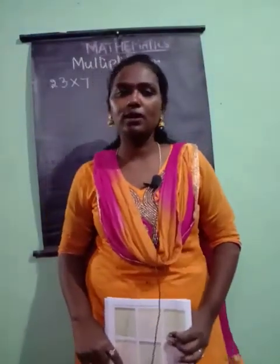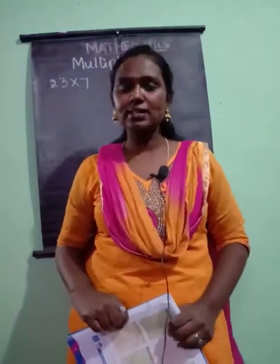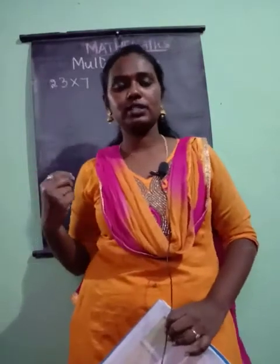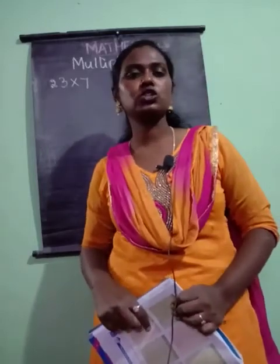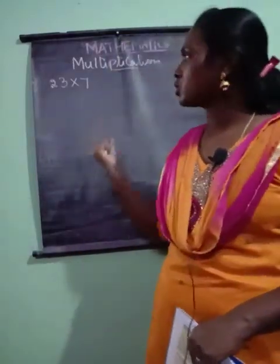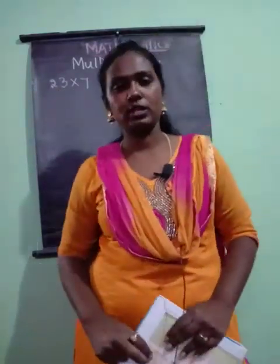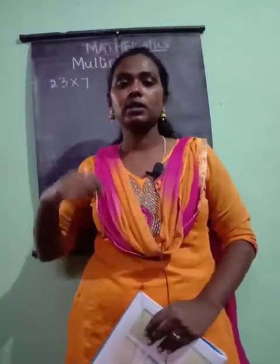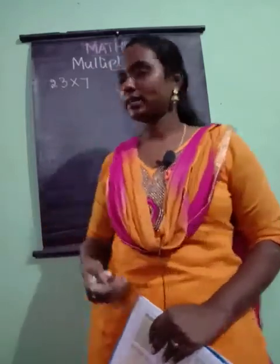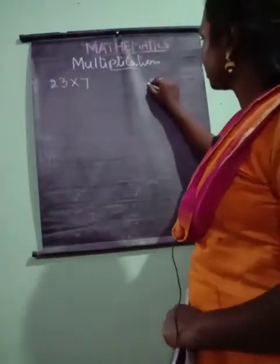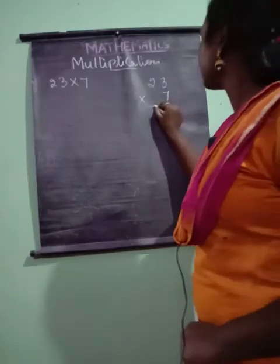Hello students, how are you all? I hope all are good. In our previous class we started with our last chapter multiplication. Let us continue with the same chapter by solving problems. Today we are going to solve a problem — we have to multiply two digits into a single digit. Let us recall that. So, 23 into 7, this is what we have to solve.